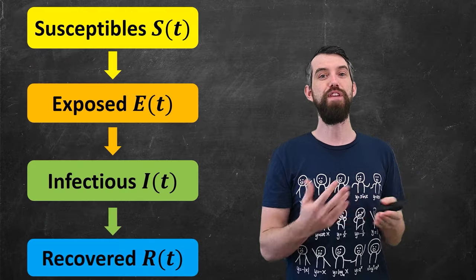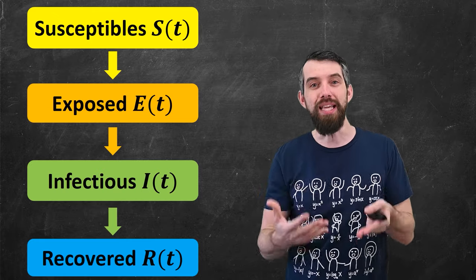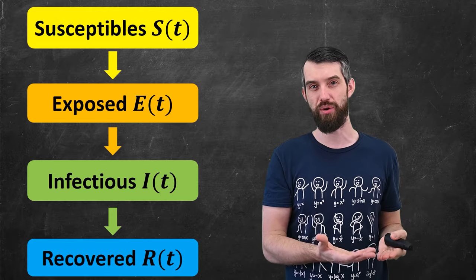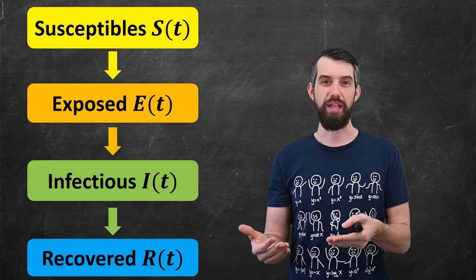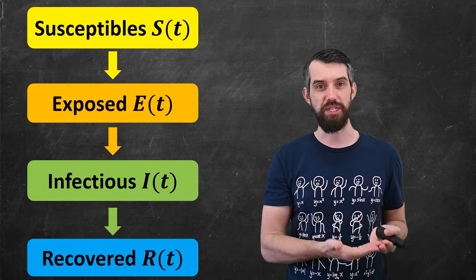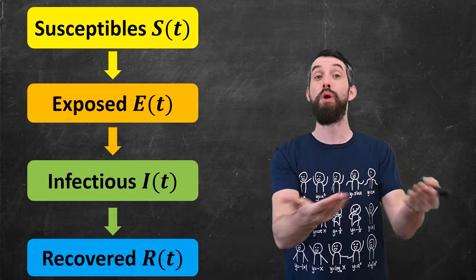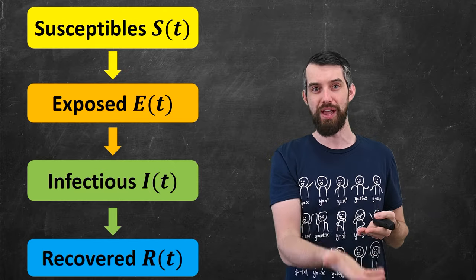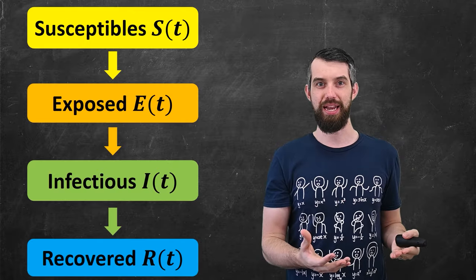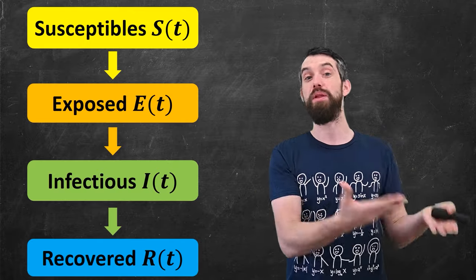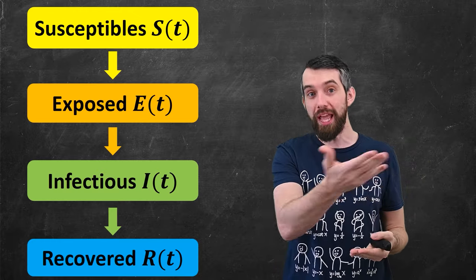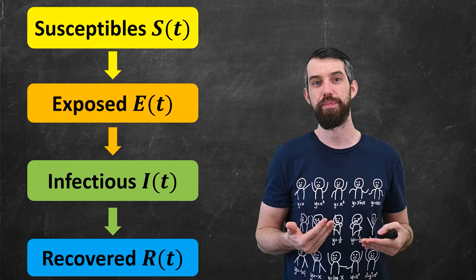The first variant of this I'm going to consider is called the SEIR model. There is now a fourth category, this exposed category. The reason for this category is that when you first get infected with a disease, often you don't immediately have symptoms and may not be actually spreading the disease to others. You may not currently be infectious. Nevertheless, you've actually received it. It's sort of a latency period as the infection is developing within somebody. After some time, these exposed people would then transition to be infectious where they were able to infect other people and then recovered after that.